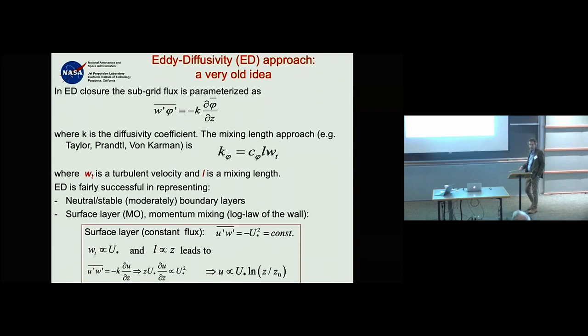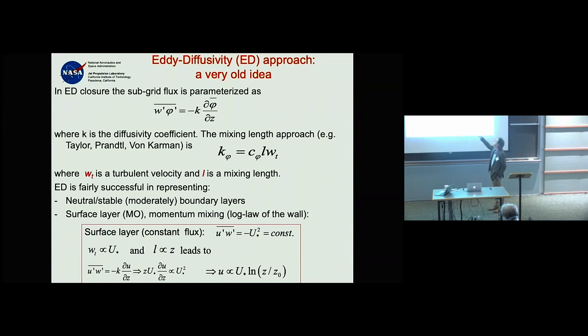The idea is to say that all turbulent mixing is proportional to the mean gradient. This is actually fairly successful and exists in every climate and weather model. It works well for stable boundary layers and surface-layer momentum mixing.